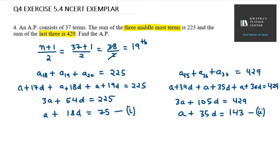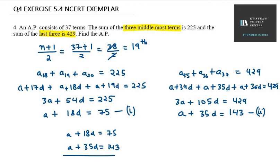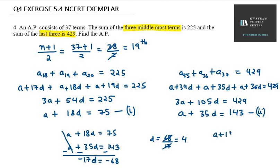We can easily eliminate 'a' from these two equations. Subtracting equation 1 from equation 2: (a + 35d) minus (a + 18d) = 143 minus 75. So 17d = 68, giving d = 4. Substituting d = 4 back into equation 1: a + 18(4) = 75, so a = 75 minus 72, giving a = 3.